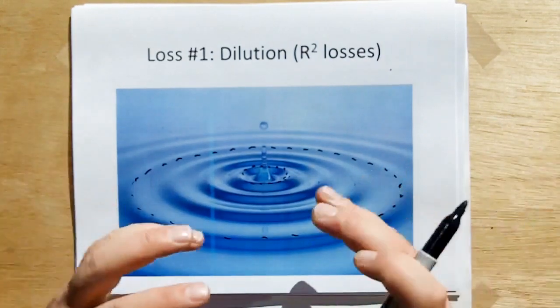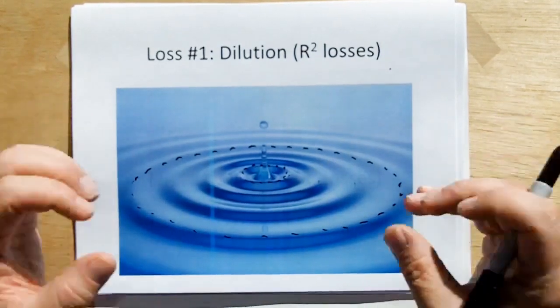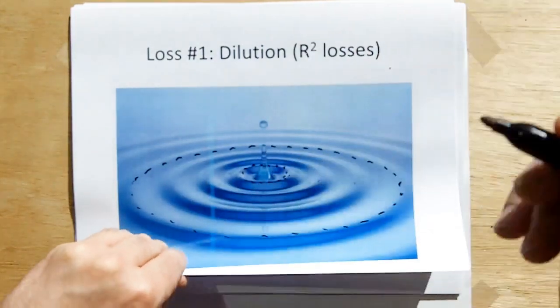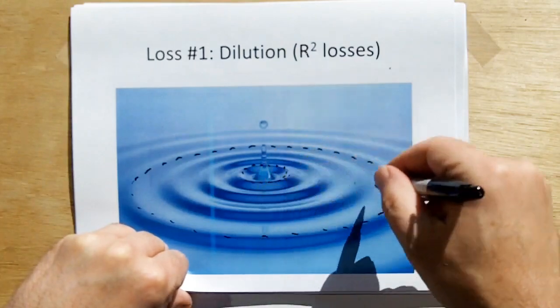Therefore, it's not really a loss. What it really is, is a dilution of the energy as the energy spreads out. But we call it R-squared losses. Or in this case, because it's a surface wave, it would be R losses.